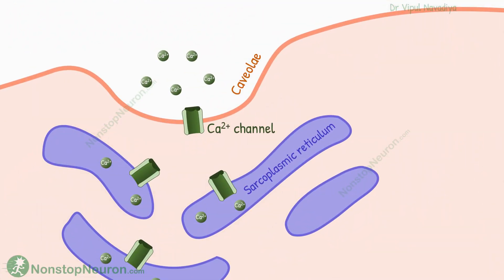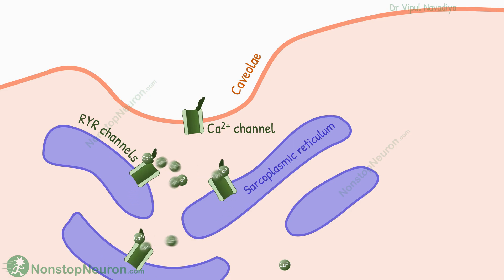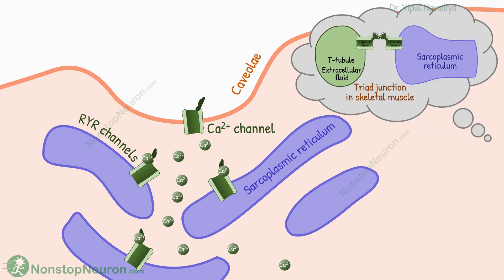These caveolae contain calcium channels. When an action potential reaches the caveolae, these channels open and allow diffusion of extracellular calcium into the cell. Some of this calcium goes to ryanodine receptor calcium channels located on the sarcoplasmic reticulum and opens them. Their opening allows diffusion of sarcoplasmic reticulum calcium into the cytoplasm. This is how calcium enters the cytoplasm.